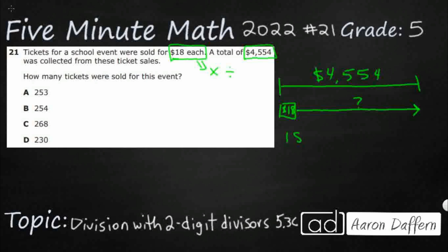I can do 18 times my question mark equals $4,554. Even if I knew my 18s, which I don't—I just know up to my 12s—I'm not going to go that high. Or I can find a related fact family. You see how this is a division strip diagram right here. The related fact family sentence is going to say $4,554 divided by 18 is going to equal my unknown there.